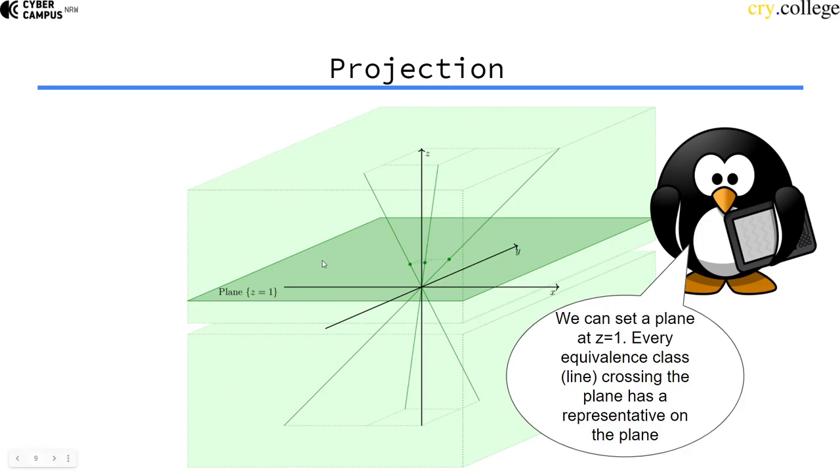Right? So all points on this line are equivalent. So this point that is on the line and on the plane is equivalent to all the other points. And every line has a representative, every equivalence class has a representative on the plane.